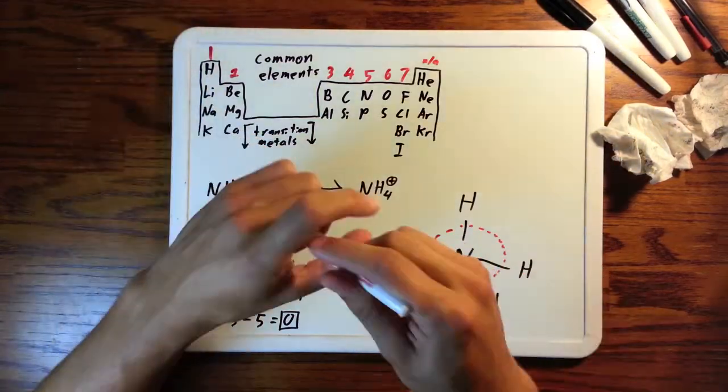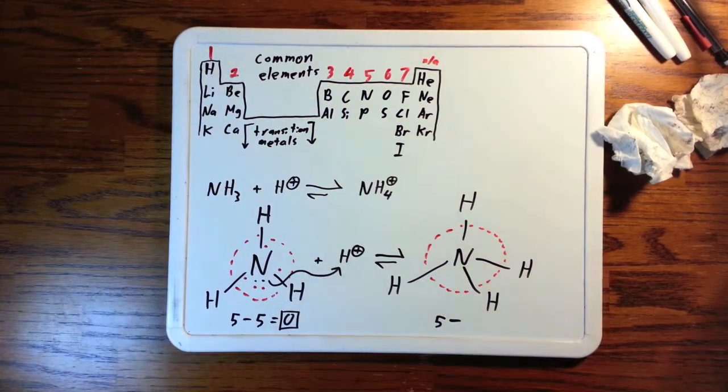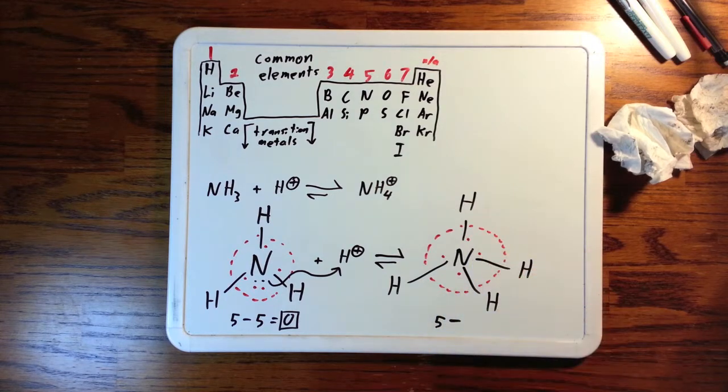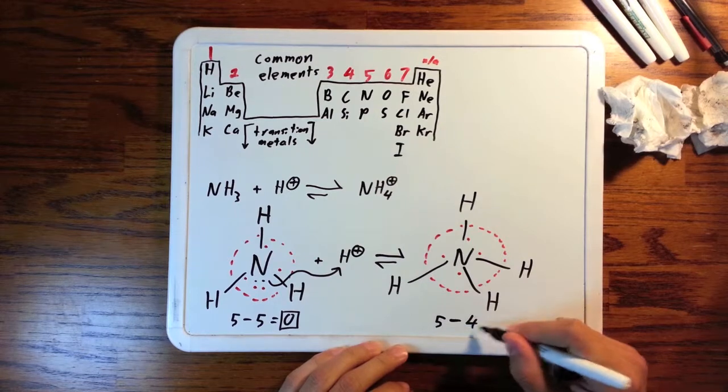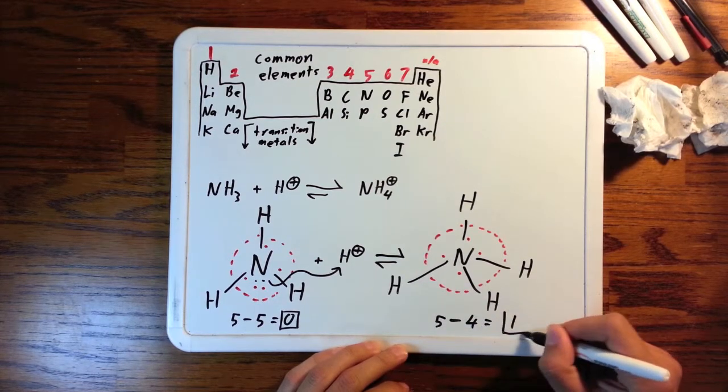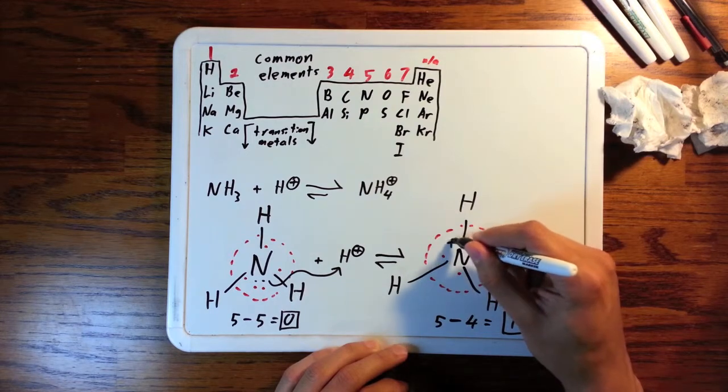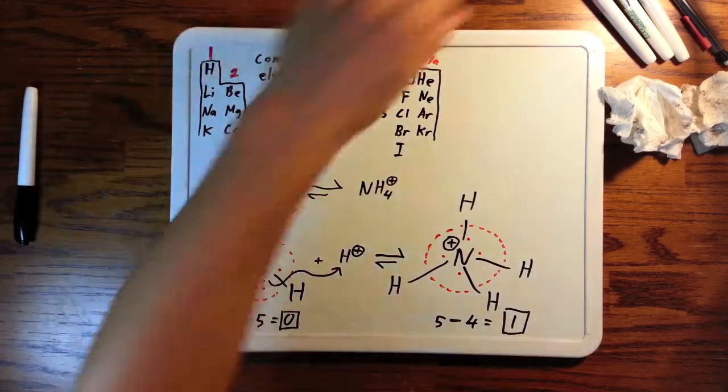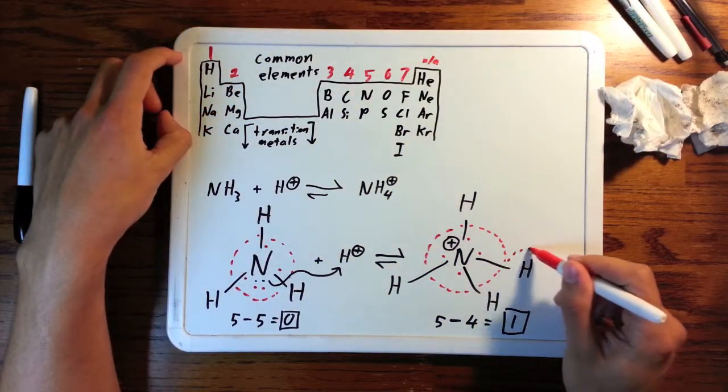Now the formal charge of this is still five minus something, because nitrogen is always five, and this time there are only four bonds around it. Although there's the same number of electrons there, there's four bonds instead of three bonds and a lone pair. So it's five minus four. That means nitrogen's formal charge is one. To show this, we write a plus one right next to it. Now once you take the formal charge of every atom in this molecule and add them up, that's the overall charge of this molecule.